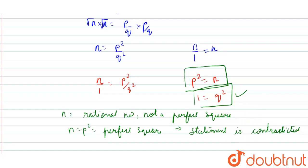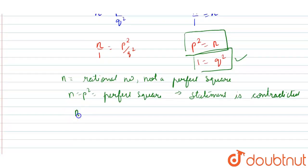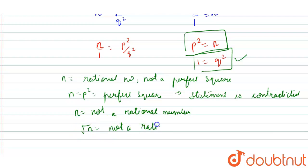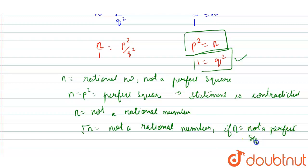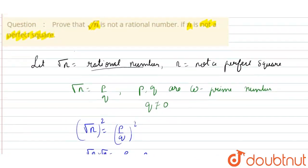From this we can say that n is not a rational number, which indirectly means √n is also not a rational number — under the condition that n is not a perfect square. So we have proved the statement. I hope you have understood the solution.